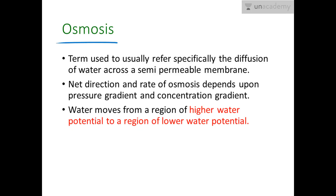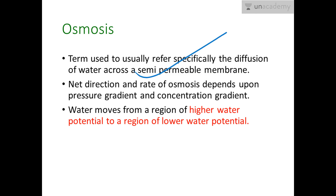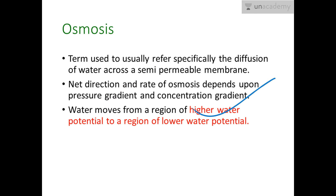Next we will talk about osmosis. Osmosis is basically a type of diffusion, but specifically refers to the diffusion of water across a semi-permeable membrane. The difference between osmosis and diffusion is that in osmosis a semi-permeable membrane is present. The net direction and rate of osmosis depends upon the pressure gradient; water moves from higher concentration to lower concentration, from higher water potential to lower water potential, or from a hypotonic solution to a hypertonic solution.